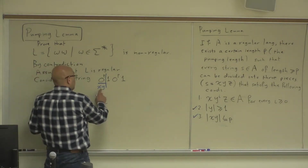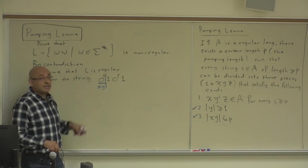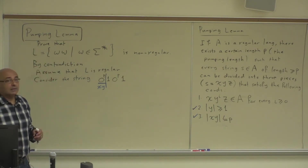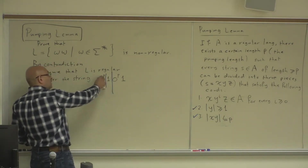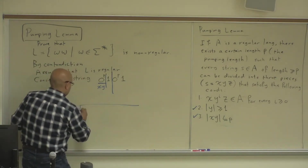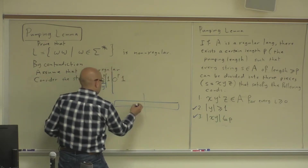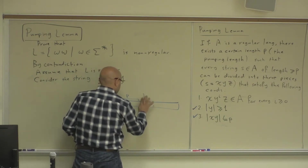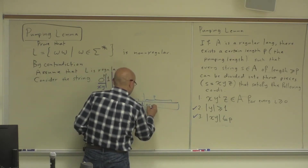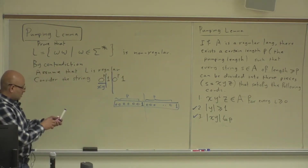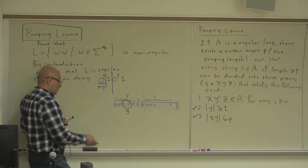What will I be repeating? Zeros. I will be repeating zeros. And if I repeat zeros, I will get a string that does not belong to the language. Why? Because this half will no longer match the other half. So this half that has P zeros in it — if I find a Y piece and repeat it — you have P zeros, then a one, then zeros, then P zeros again and a one. If you find a Y here and repeat it, you will get more zeros here than you have there.